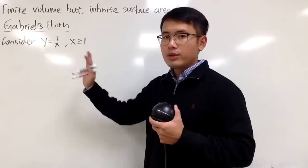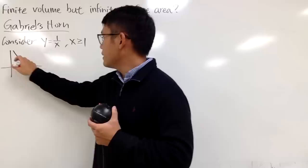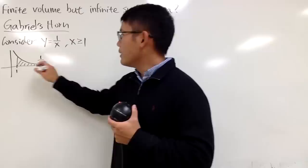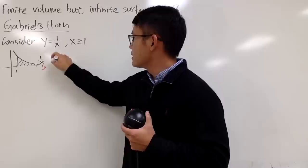If you look at this, this is the region like that. This is 1 over x, and you go from 1 to infinity. So first of all, you take this region, and then you rotate it about the x-axis. We get a picture like this.